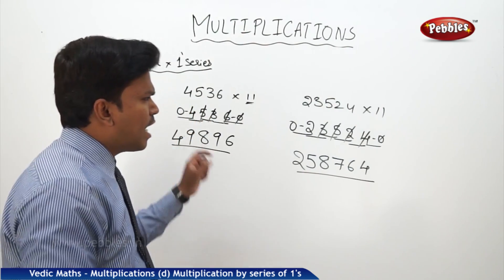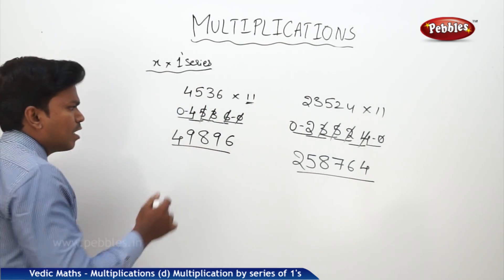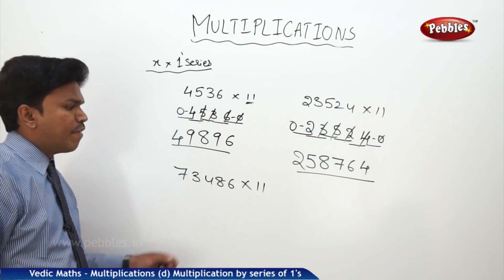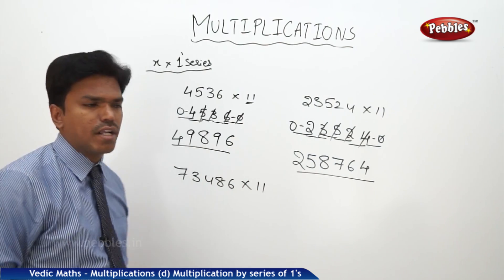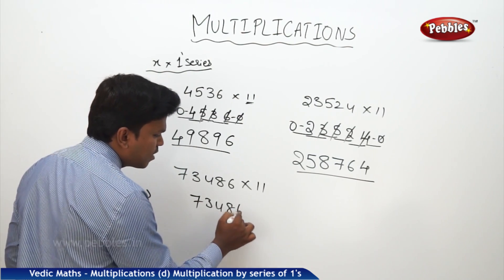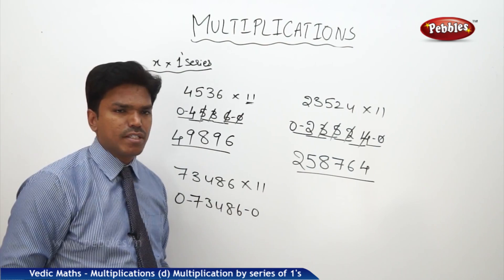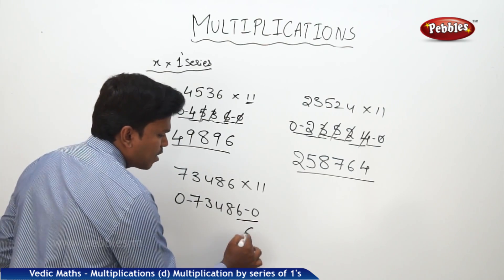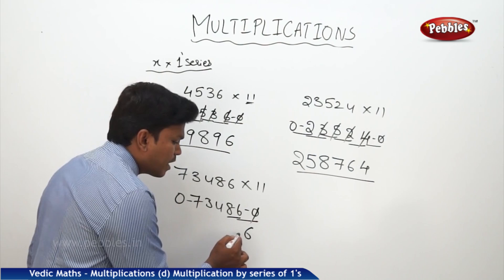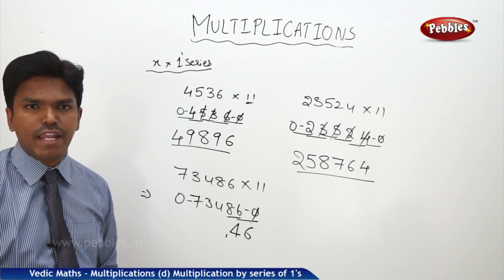Now, in the same way, let us take a bigger number: 73486 into 11. Drop the number as it is: 73486. How many ones? 2 ones. So one zero before and one zero after. Maximum 2 digits at a time from the right. 0 plus 6 = 6. Leave the rightmost: 6 plus 8 = 14, drop 4, carry 1. Next: 4 plus 8 = 12, plus 1 carry = 13, drop 3, carry 1. Then 3 plus 4 = 7, plus 1 = 8. Then 7 plus 3 = 10, drop 0, carry 1. Finally 0 plus 7 = 7, plus 1 carry = 8. So the answer is 808346.